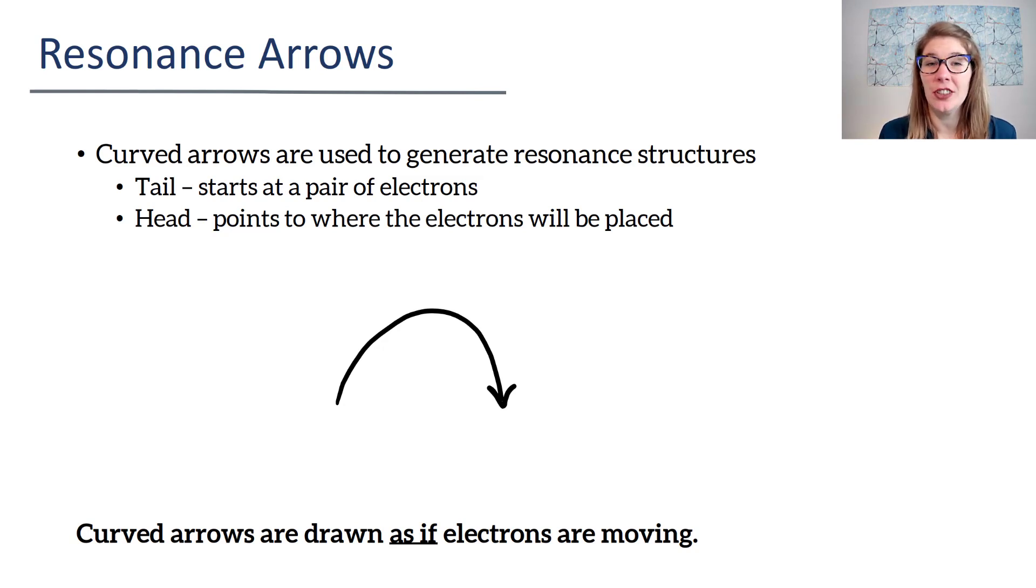When you were in general chemistry and you were asked to generate resonance structures, you had no idea what was going on. You were just taking the double bond and moving it to a different location. In organic chemistry, we're going to step that up so much. You really have to be able to generate resonance structures and know some rules for how to generate them. Before we get into the rules, which will be a separate video,